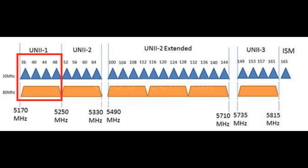80 MHz: Two contiguous 40 MHz channels are bonded into an 80 MHz channel. Any of the four 20 MHz channels in the 80 MHz channel can be selected as the primary channel. For example, channels 36, 40, 44, and 48 can be bonded into an 80 MHz channel.